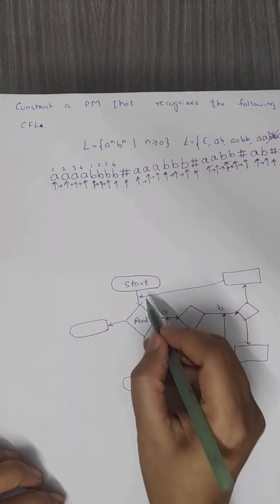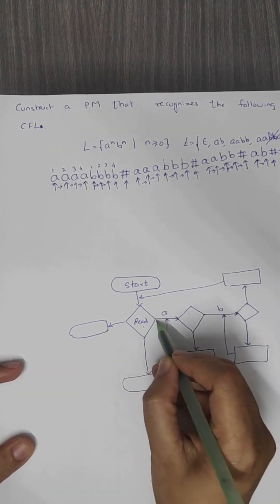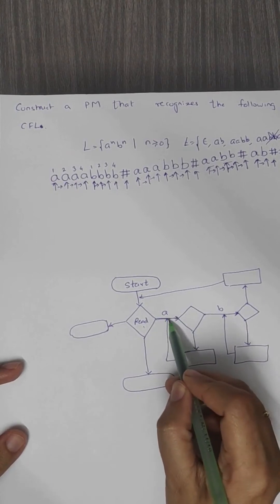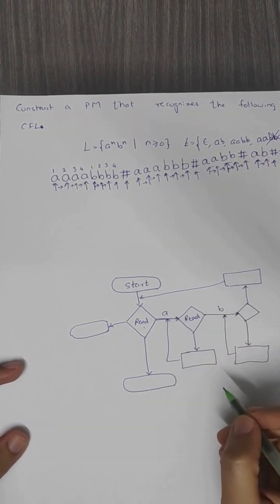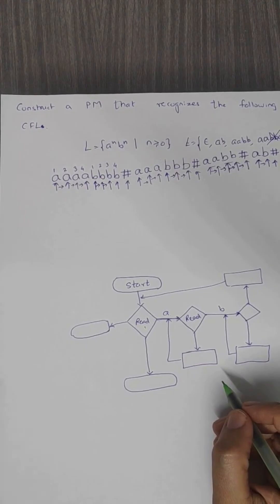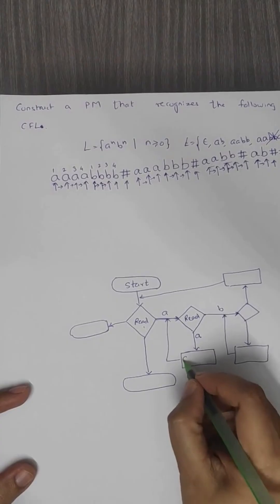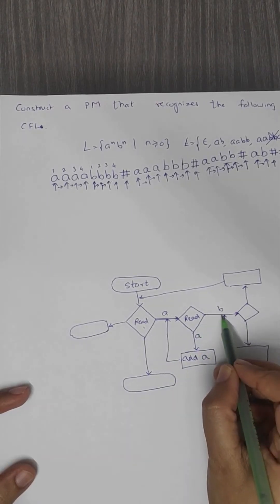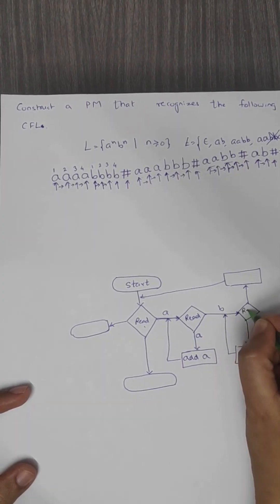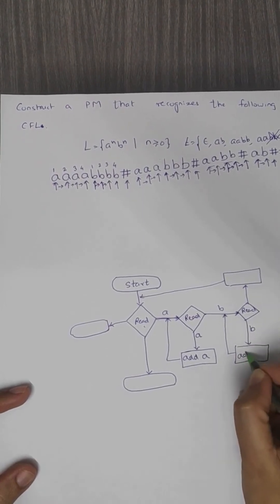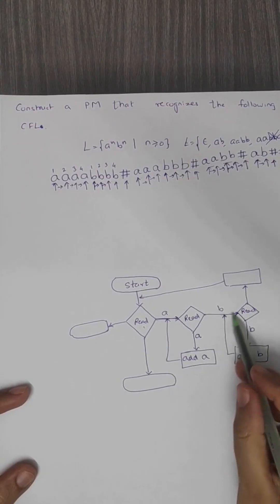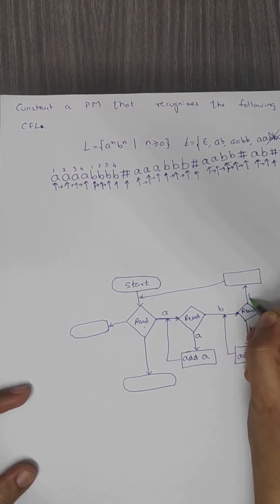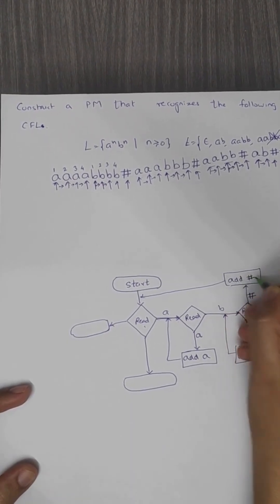Let us see the formal solution. We start, then read — this read is for reading the first a. When we read this first a, we skip it, meaning we do not add any symbol into the queue. After this first read, all subsequent a's should be added onto the queue — so we read a and add a into the queue. This loop continues. Once we receive the first b, we skip that b — not adding it into the queue. Then we start the next read operation: if we get b, add b onto the queue, continuing this loop for all b's. After adding all b's, when we get a hash, that hash is also added onto the queue.